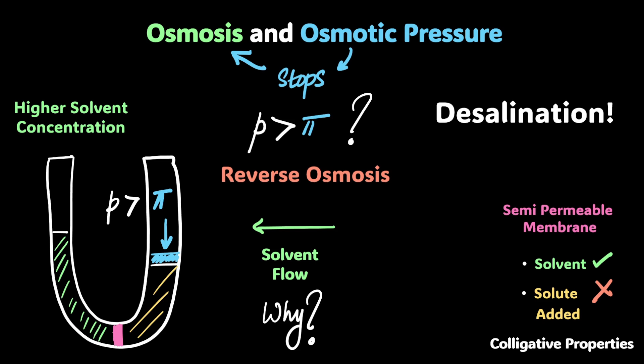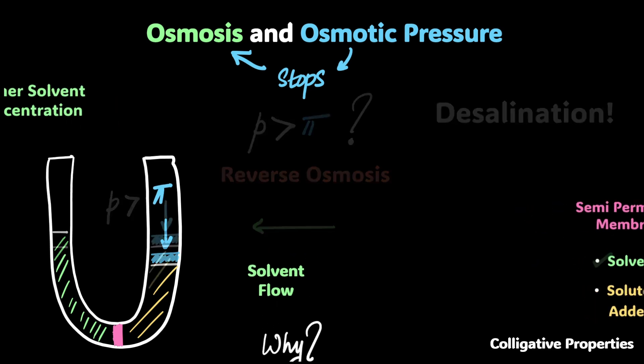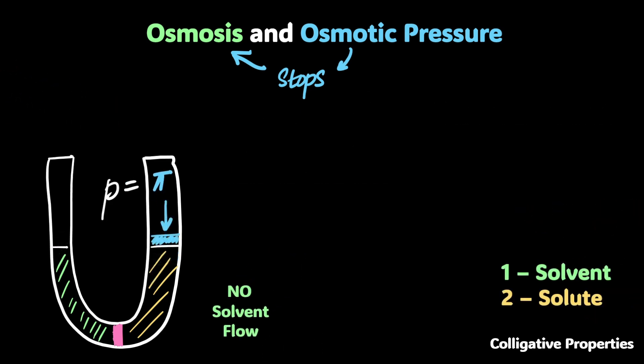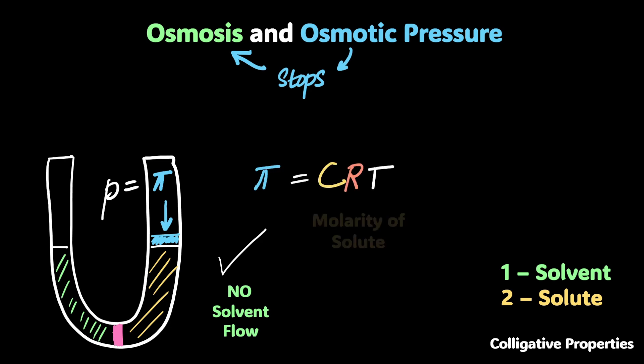Desalination is really expensive because the pressure you need to apply is pretty high. But if you're living in a desert, you've got no other option — desalination is the only way you can get pure water. When P is equal to pi, the osmotic pressure, no solvent flows, and this is the condition we'll focus on for most of our discussions, especially for numerical problems.